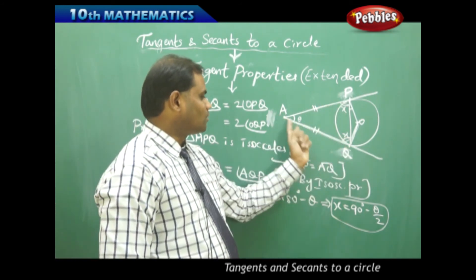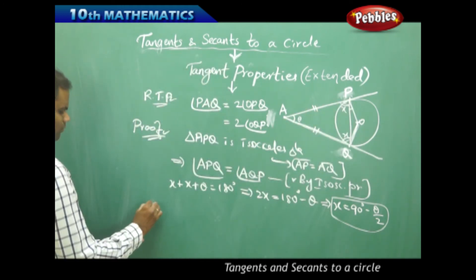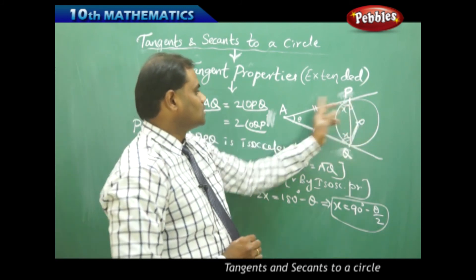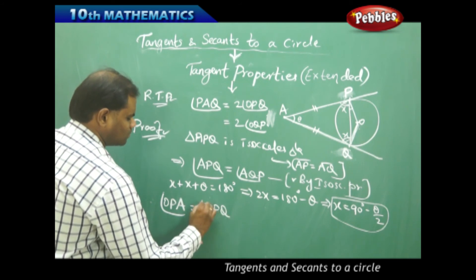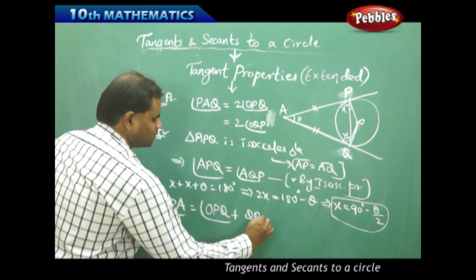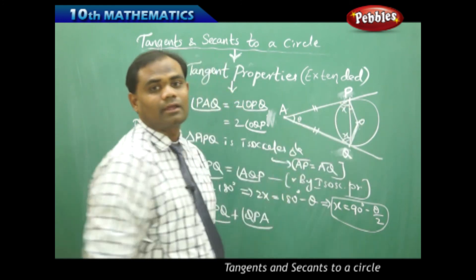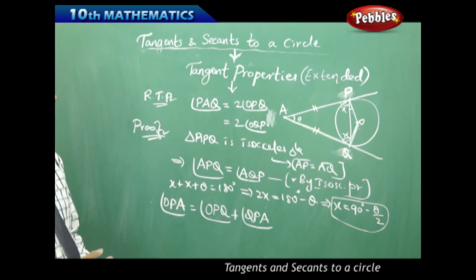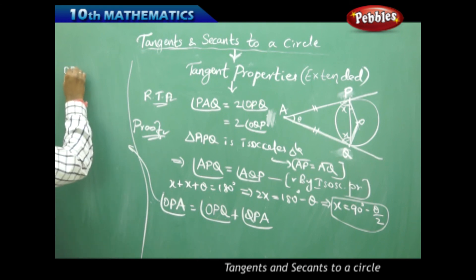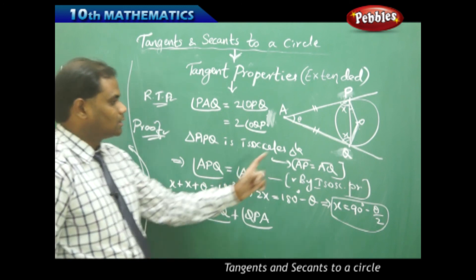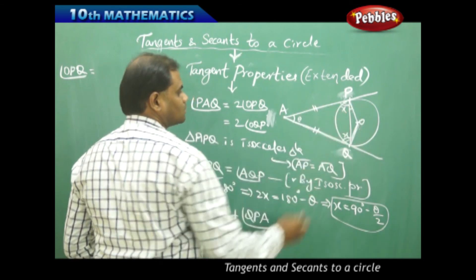So x equals angle APQ or angle AQP, which equals 90 minus theta over 2. Next, consider angle OPA. Angle OPA equals angle OPQ plus angle QPA. Therefore angle OPQ equals angle OPA minus angle QPA, which gives us the value we need to find to complete the proof.